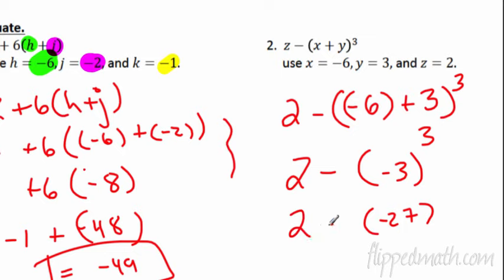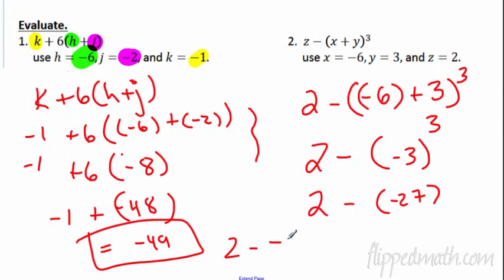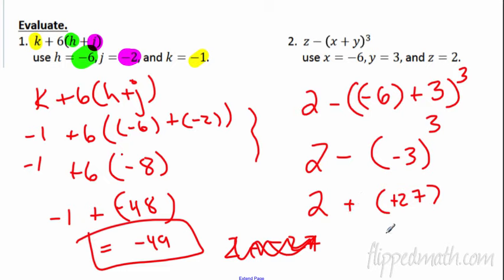I'm using parentheses so it's really clear what I'm doing. If I write it without parentheses, things can blend together and people get confused. Now I have 2 minus negative 27. Minus a negative means plus, so we're going to get 29 for this one. I did the first two — pause the video and do the next two.